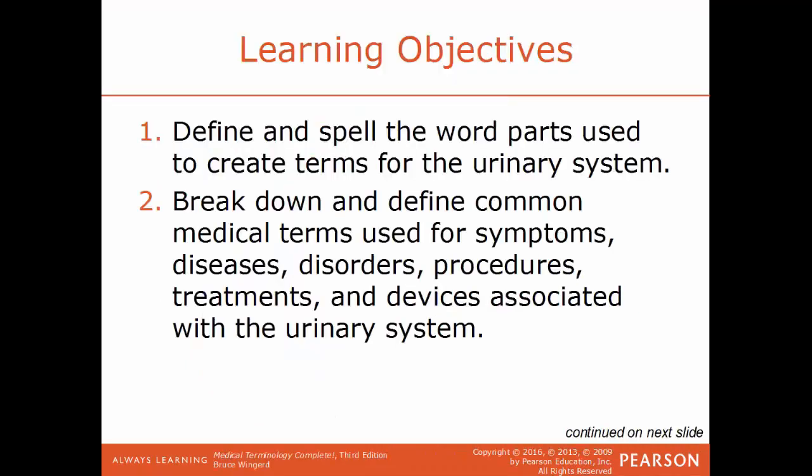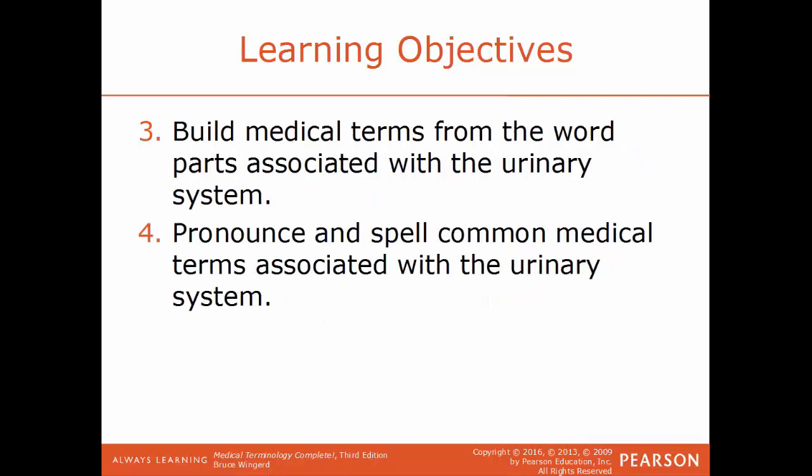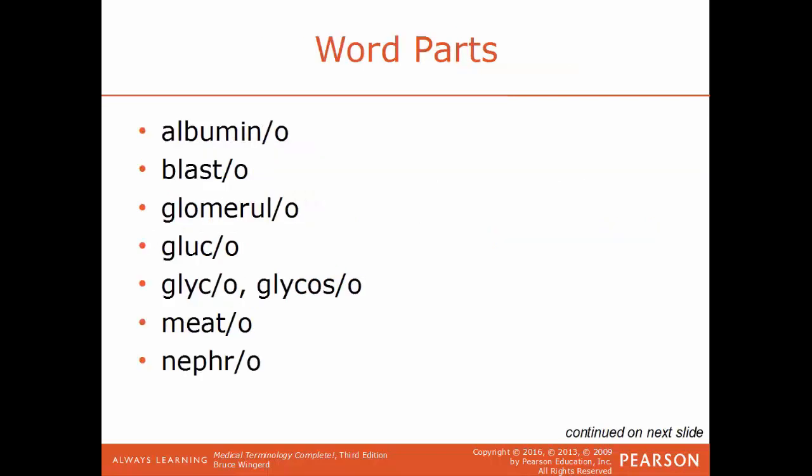Learning objectives for this chapter: define and spell the word parts used to create terms for the urinary system; break down and define common medical terms used for symptoms, diseases, disorders, procedures, treatments, and devices associated with the system; build medical terms from the word parts associated with the urinary system; and pronounce and spell common medical terms associated with the system.